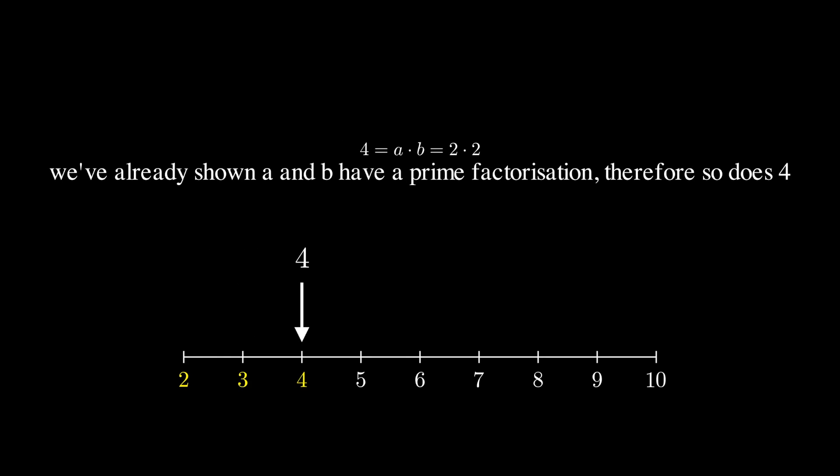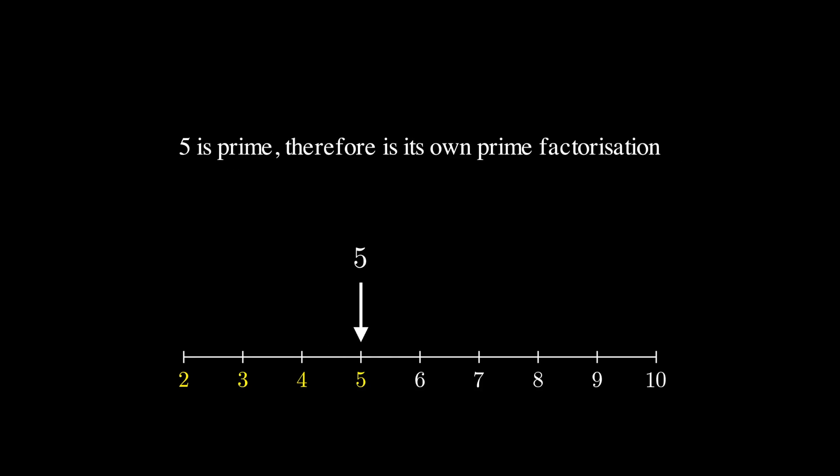We can show this on the number line. 2 and 3 are easy, they're both prime numbers. 4 is comprised of 2 multiplied by 2, and as we've already shown that 2 has prime factors, we can show that 4 does, as it's the next layer on our factor tower. 5 is also its own prime factorisation.